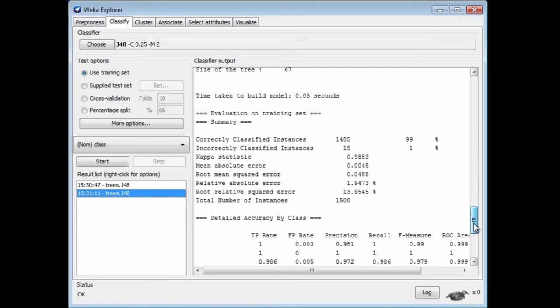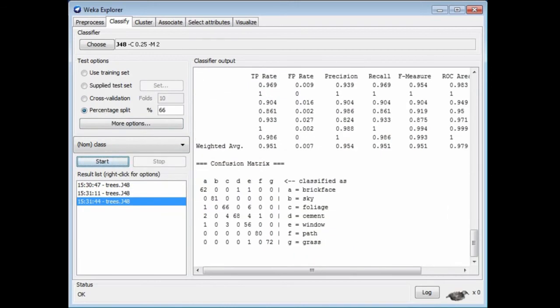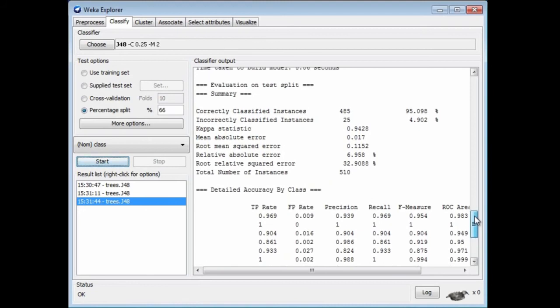If we had just one dataset, if we didn't have a test set, we could do a percentage split. Here's a percentage split. This is going to be 66% training data and 34% test data. It's going to make a random split of the dataset. If I run that, I get 95%. That's just about the same as what we got when we had an independent test set, just slightly worse.